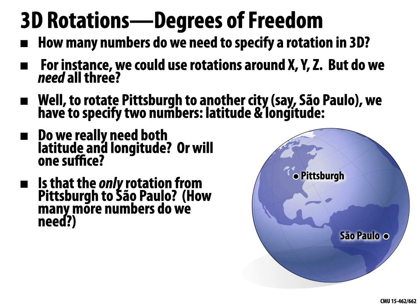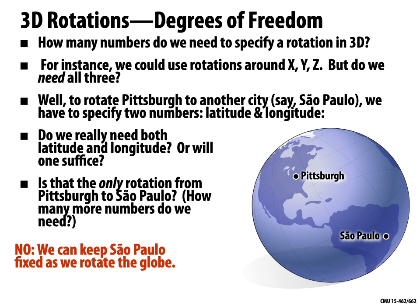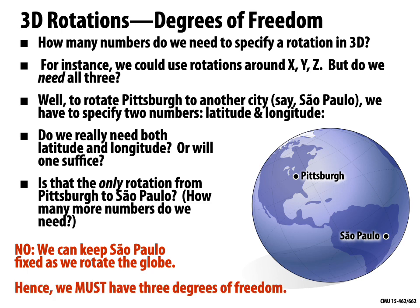Or are there other rotations we're missing? An important thing to realize is that when we do this operation of rotating one point to another, we have an additional motion we can do. Once we've rotated Pittsburgh to São Paulo, we can pick another angle of rotation that keeps that new city fixed as we rotate the globe. Hence we must have three degrees of freedom: two degrees of freedom to take any point on the sphere to any other, and for any such motion, a whole family of rotations — a third number we can specify.